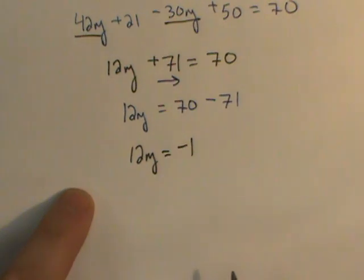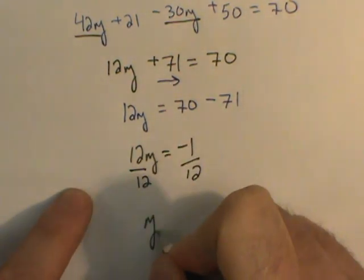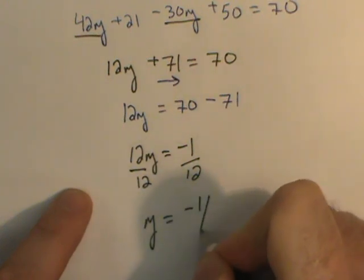And of course, as the last step, you divide both sides by 12. And we report y equals negative 1/12.